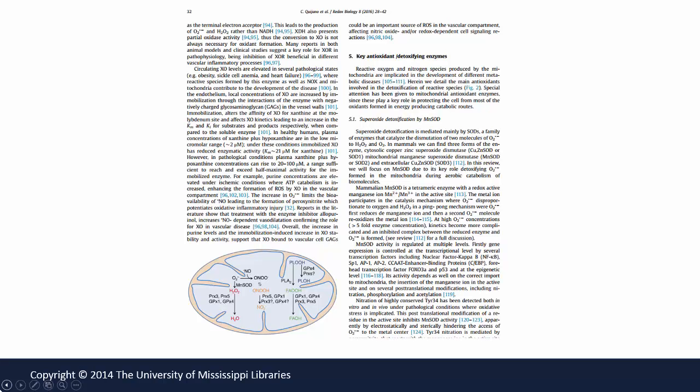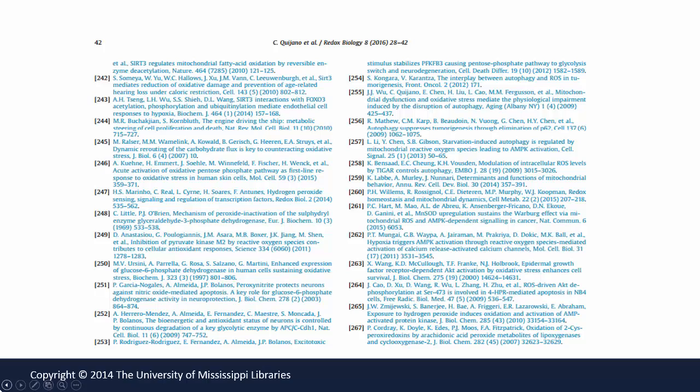A review article is an article that summarizes the current state of understanding on a topic. It summarizes previously published material rather than reporting new facts. Review articles are sometimes also called survey articles. They are secondary sources because they are not providing first-hand observations or analyses. Because a review article is summarizing research on a topic, it will have many cited references. This particular review article had 267 references, which is normal for a review article but would be abnormal for a primary source article.